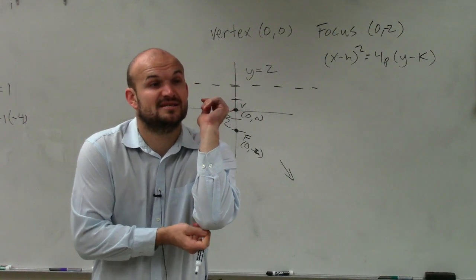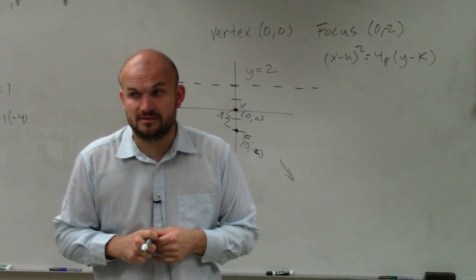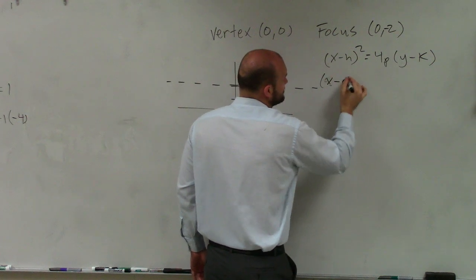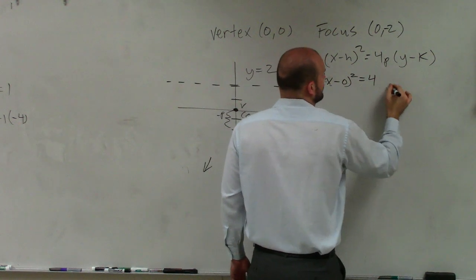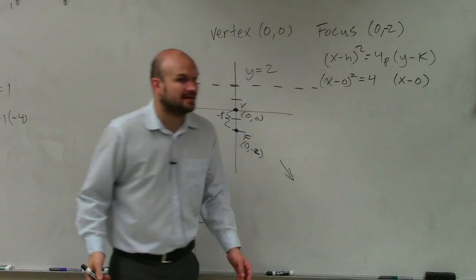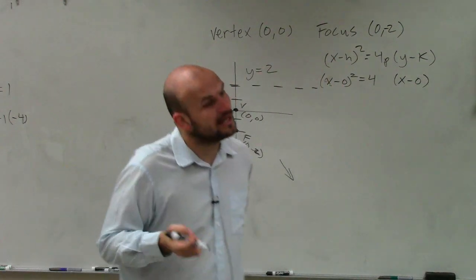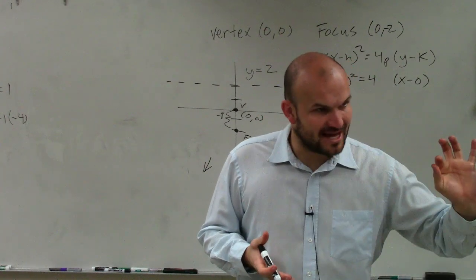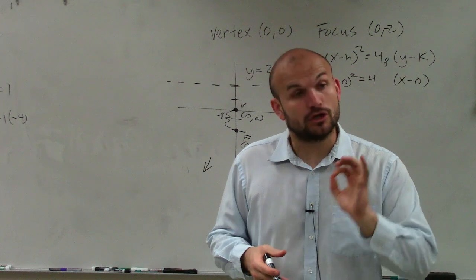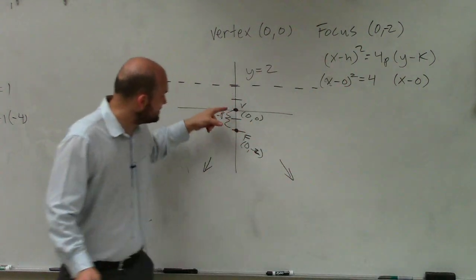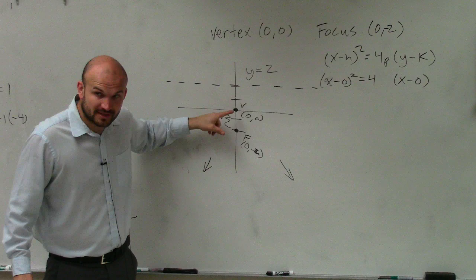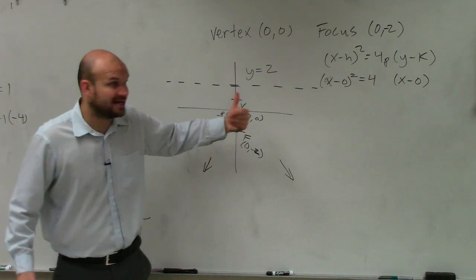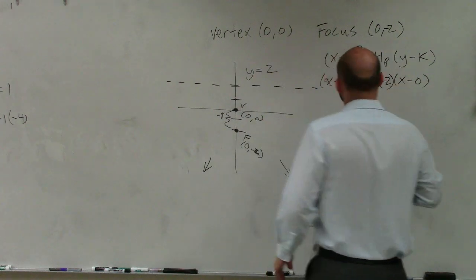OK. So we already talked about the vertex. The vertex is at 0, 0. So I can put in x minus 0 squared equals 4 times y minus 0. Now, p, remember, if you didn't write this down, write it down again. p is the distance from the vertex to your focus, including your direction. So this distance from 0 to negative 2 is p, which is my negative 2. So therefore, this is 4 times negative 2.